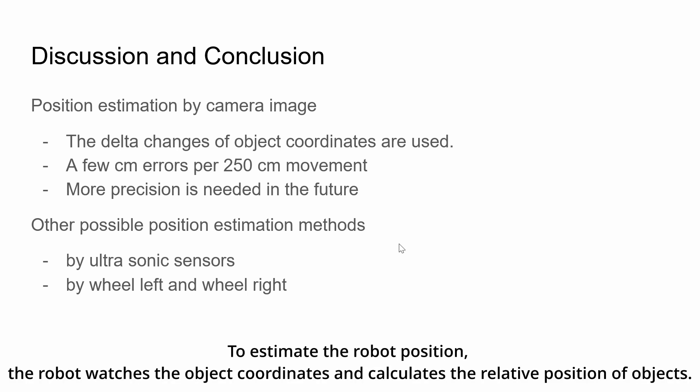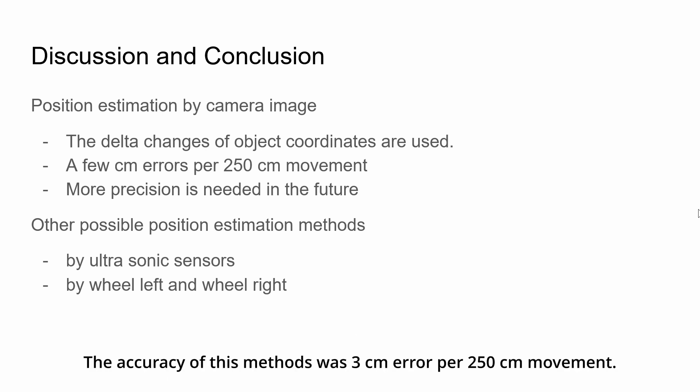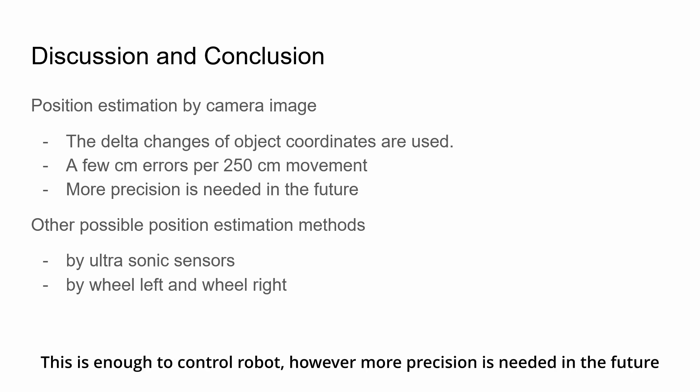To estimate the robot position, the robot watches the object coordinates and calculates the relative position of the object. For example, if the robot goes straight for 3 cm in a short time, the difference of relative position is also 3 cm. The accuracy of this method was 3 cm error per 250 cm movement. This is enough to control the robot.